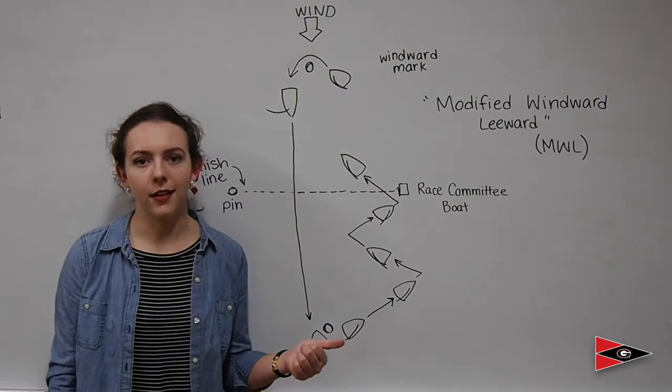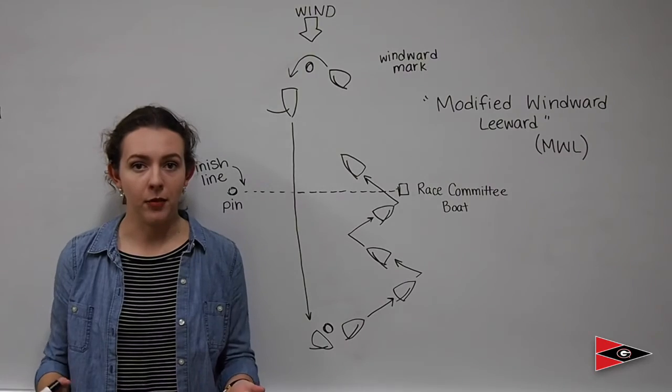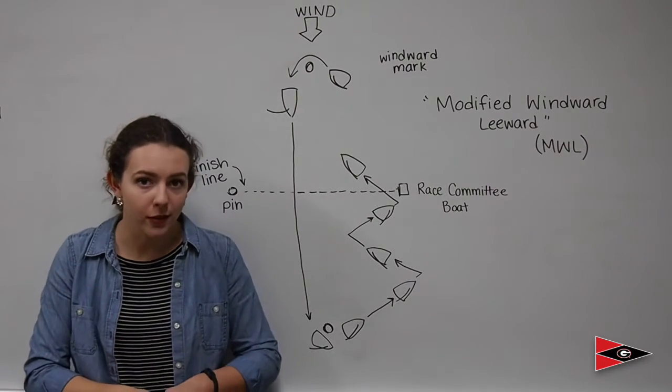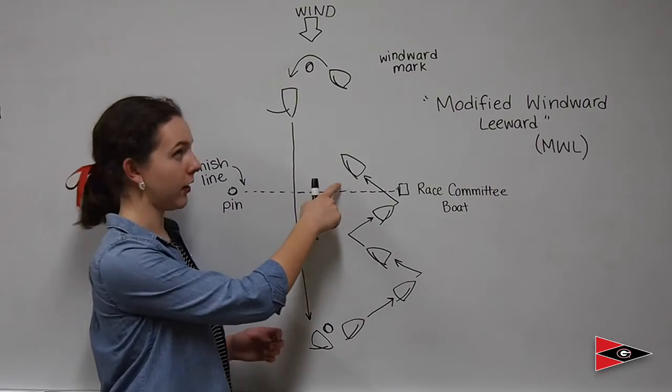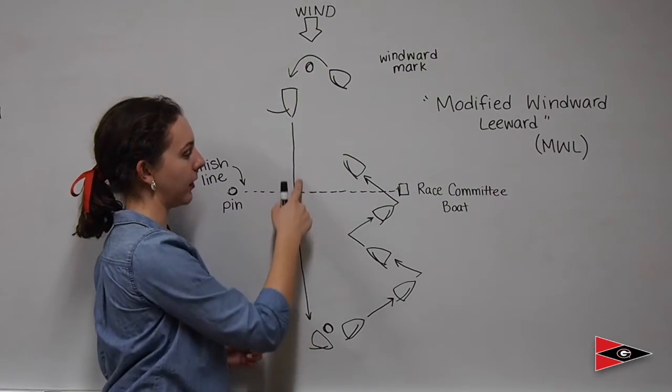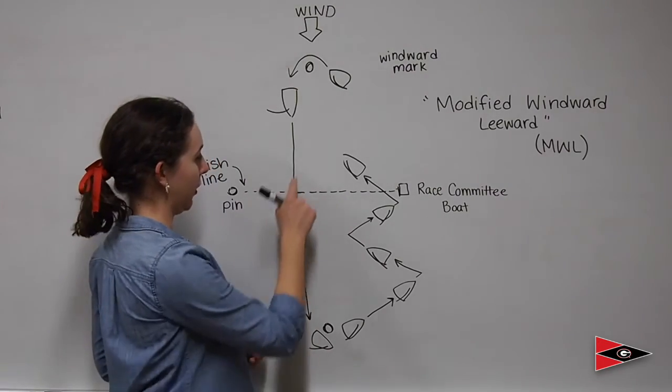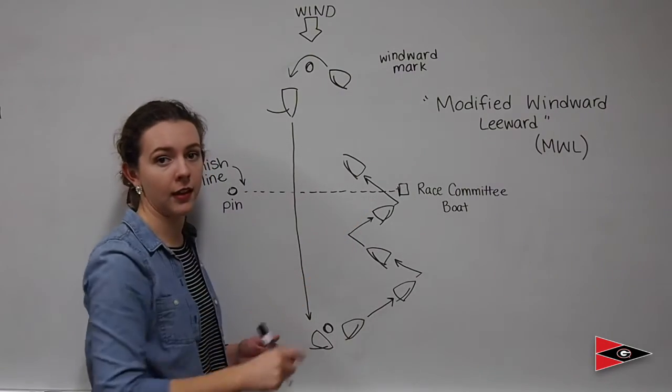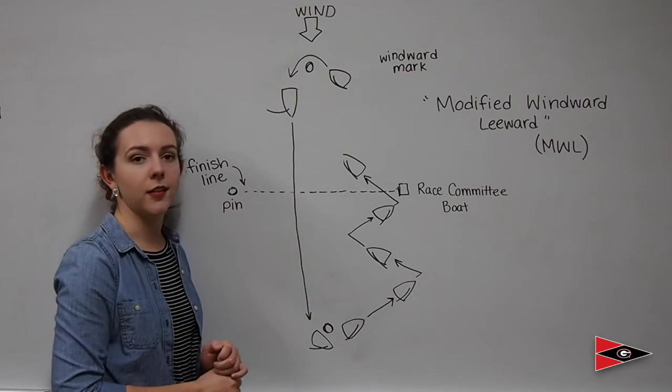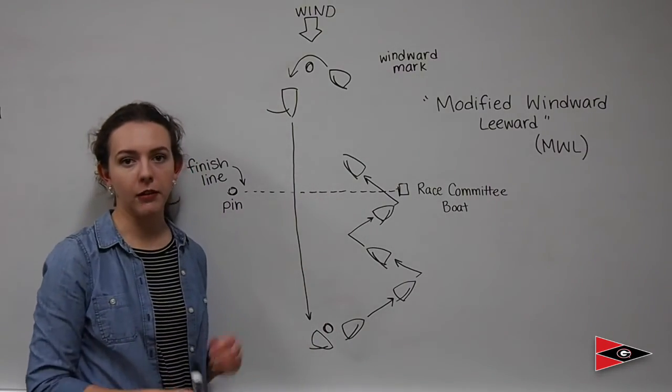What we just completed here is called a modified windward-leeward course, or abbreviated as MWL. It is the most common race course that you'll see in high school and college sailing. And the way I like to remember this is, after starting, you have a windward leg and you have a leeward leg. And if it were just a windward-leeward race, you would finish on this downwind leg right here, crossing through the pin and the race committee boat. But since it's a modified windward-leeward, you add on a little extra and you complete a full lap.